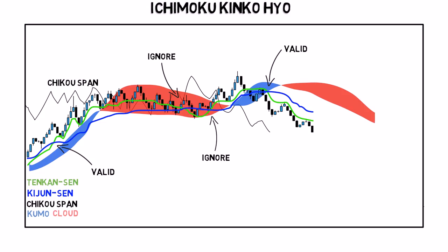We use the Chikospan to filter out crossover entries. For a valid long entry, the Chikospan should also be above the Kumo cloud. And for a short entry, the Chikospan needs to be below the Kumo cloud.